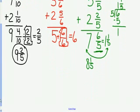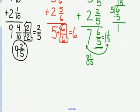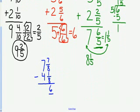The subtraction without regrouping is really very similar to addition. It's a very simple problem. Here's one example. 7 and 7 eighths minus 4 and 1 eighth. 7 eighths minus 1 eighth is 6 eighths. 7 minus 4 is 3.